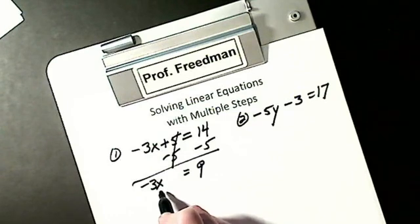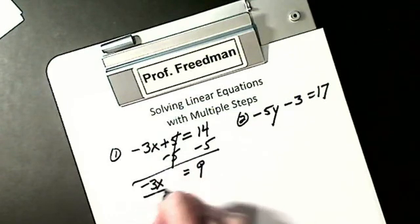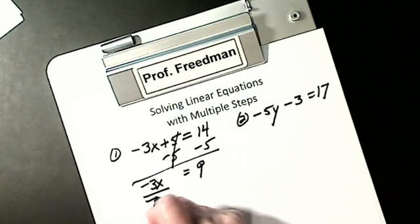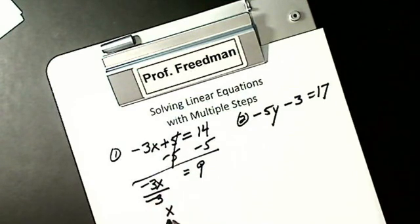I want X alone. Do I divide by positive 3 or negative 3? Negative 3. Because I want this X to be positive.